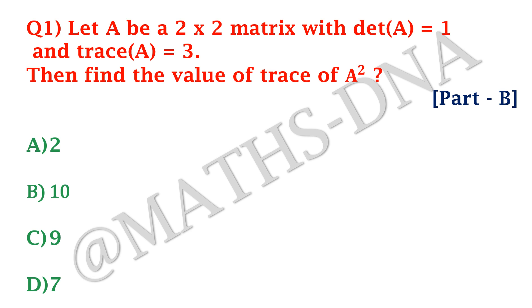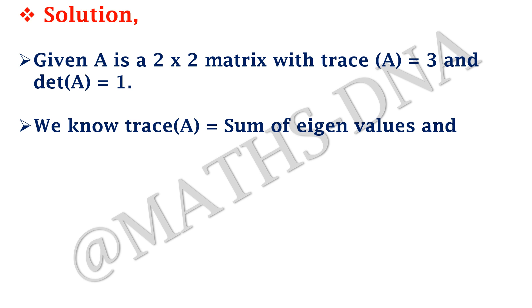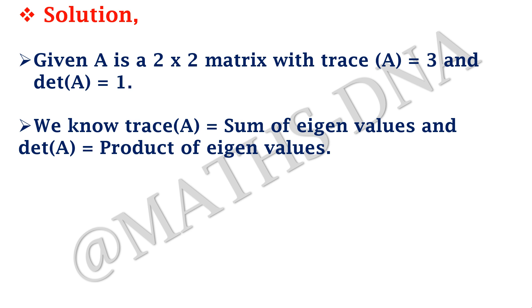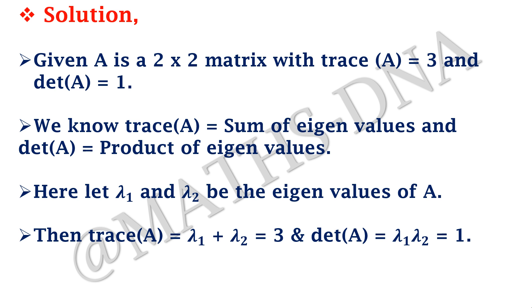This is a very simple question if you know the property of trace, determinant, and their relation with eigenvalues. It is given that A is a 2×2 matrix with trace of A equals 3 and determinant of A equals 1. We know that trace is the sum of eigenvalues and determinant is the product of the eigenvalues. Let λ₁ and λ₂ be the two eigenvalues, so λ₁ + λ₂ = 3 and λ₁ · λ₂ = 1.